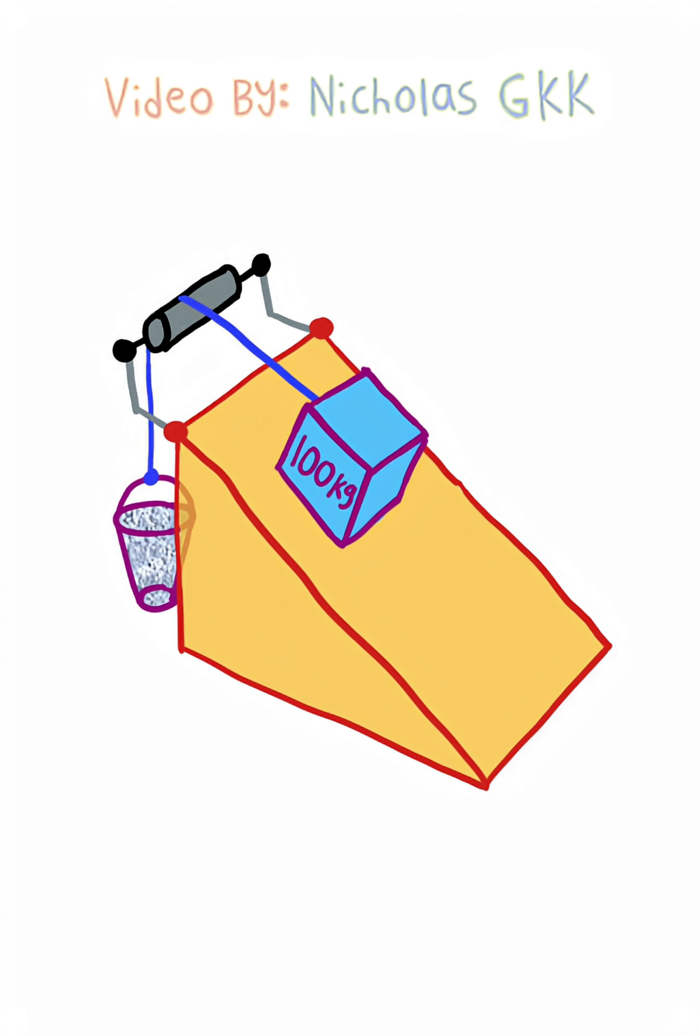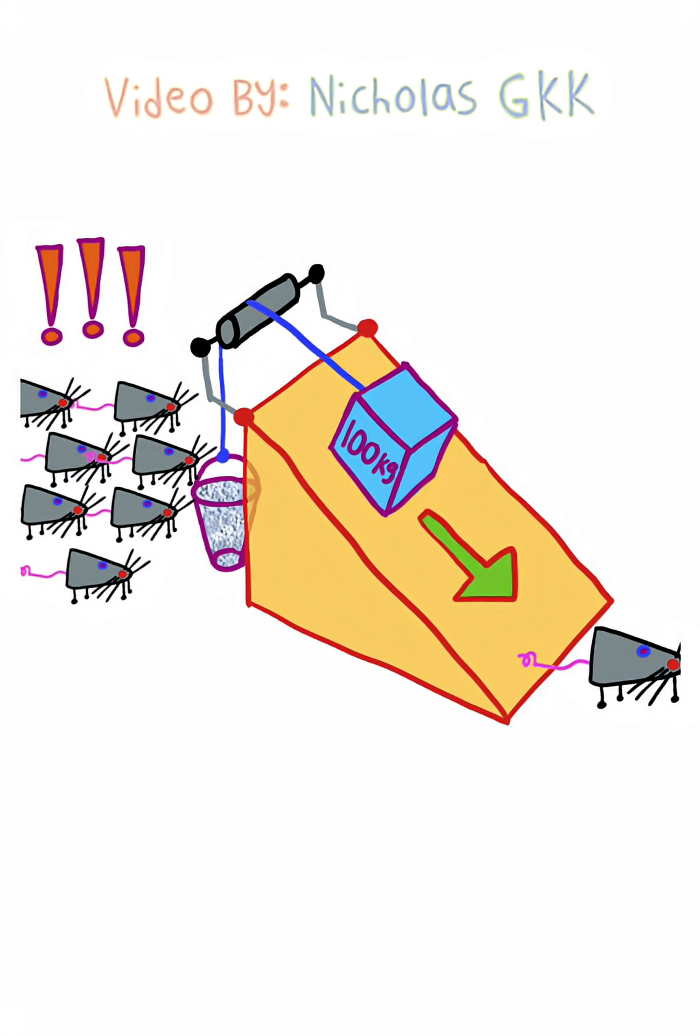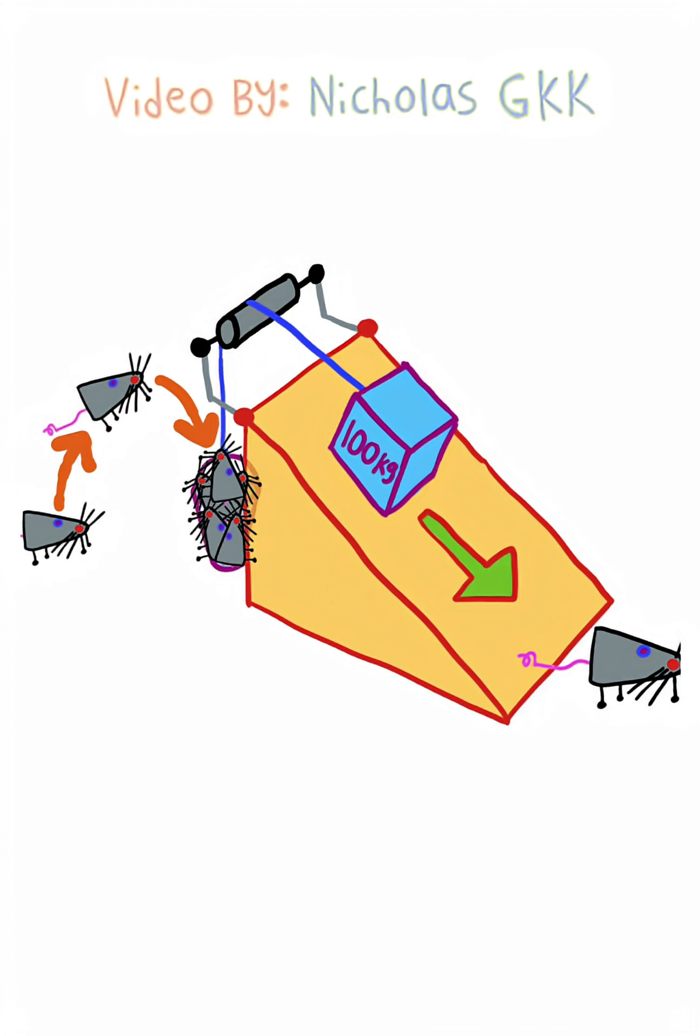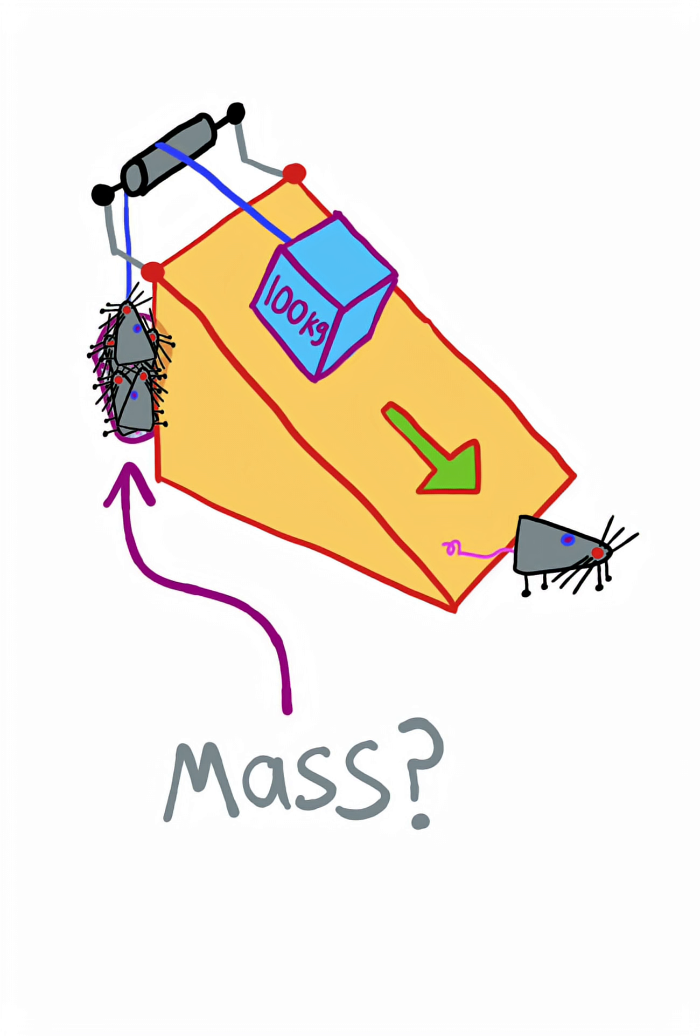So here we have this suspicious mouse trap that's about to claim its first victim, when suddenly his mouse friends notice and jump inside the bucket to try and stop the system. What mass do these mice need to reach in order to balance the forces?